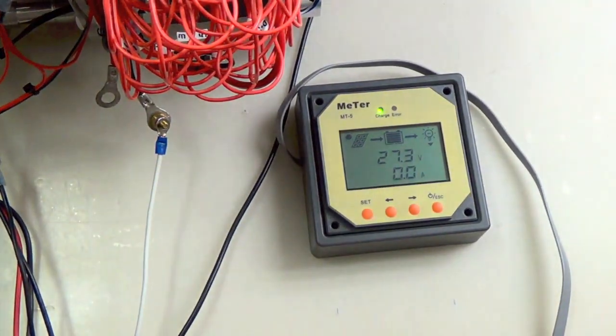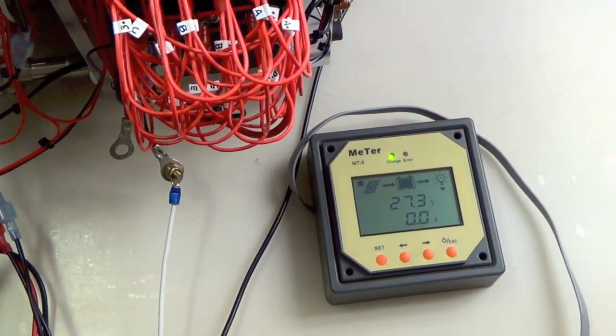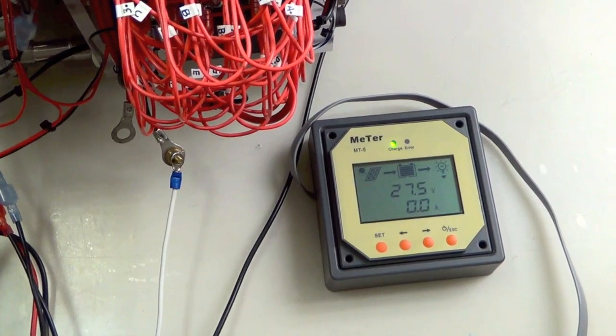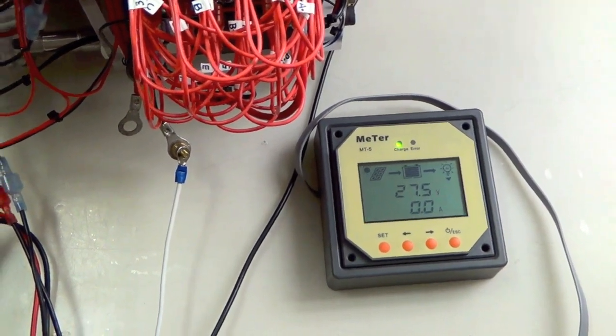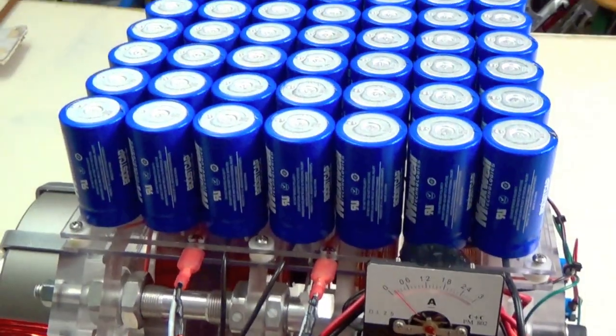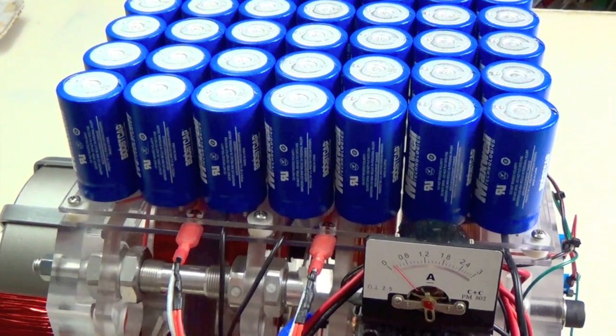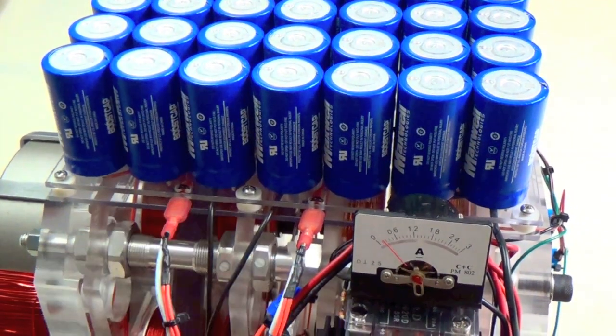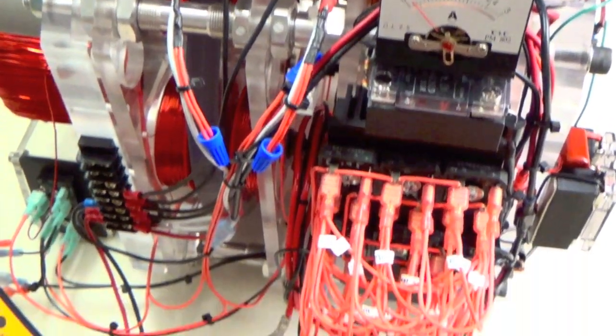So again, you can see it's still pulling zero amps. Just the standing voltage, 27, because these caps are set up in three separate banks of 27 volts each. But they're connected, so they work simultaneously.